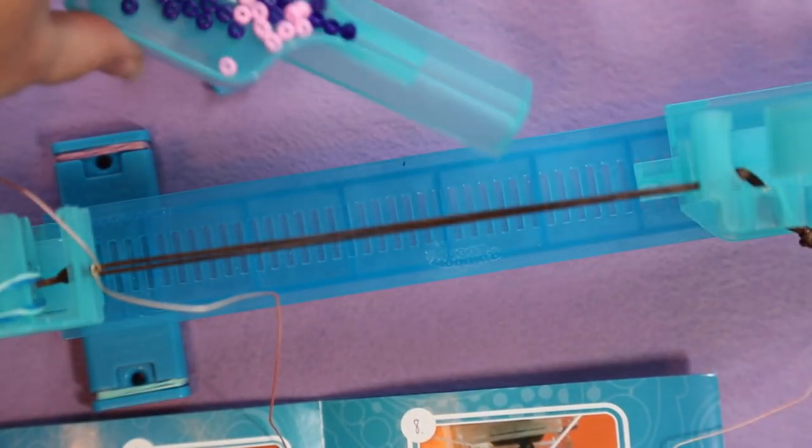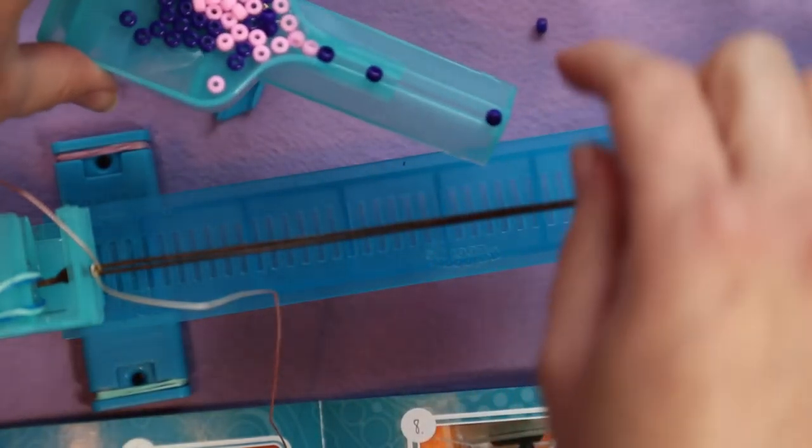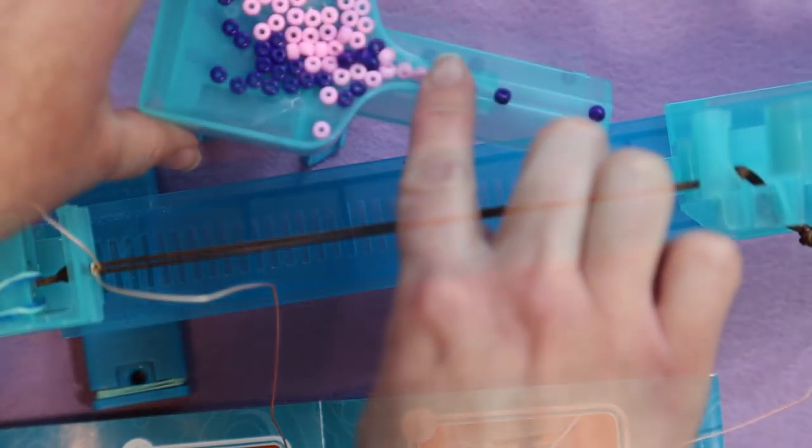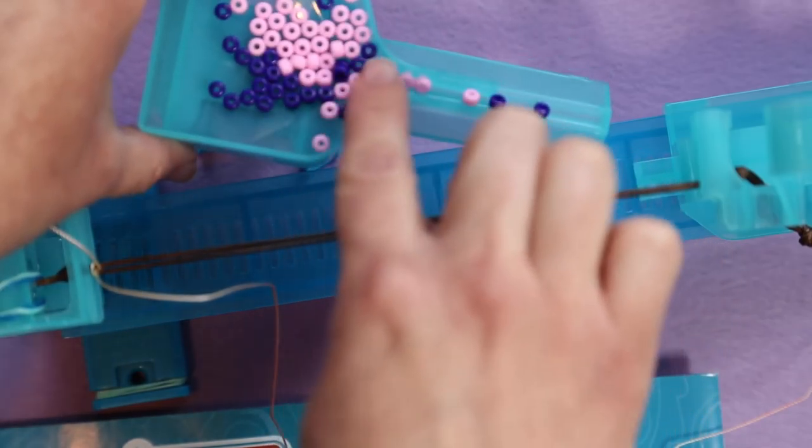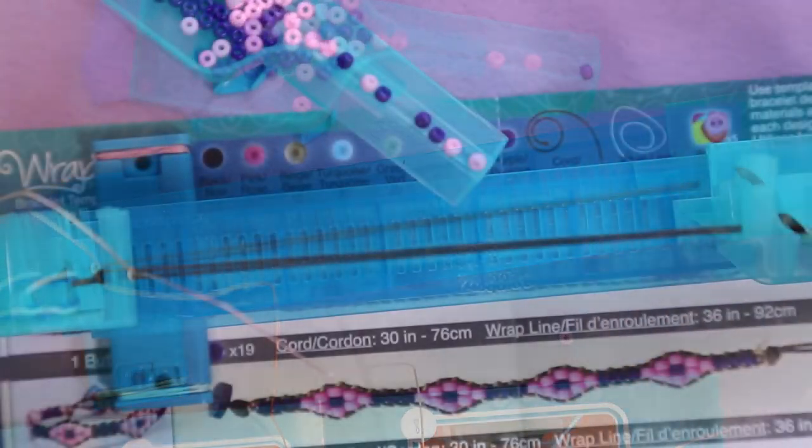Gently shake until the beads align in the track. Oops, I dropped one. I'm not good at the whole gentle shaking thing. Come on little beads. You can do it. Oh no, they're jumping off.